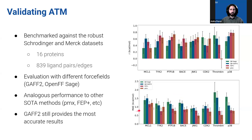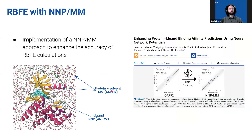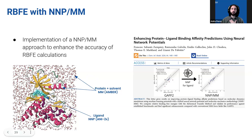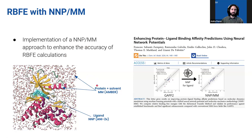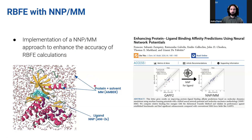Because we're able to use any type of force field, this gives us an opportunity to use neural network potentials. The idea is to use neural network potentials to parametrize the small molecules, since they have been trained with QM data and are much more precise at parametrizing ligands. The ligand force field is one of the main contributions to the accuracy of these simulations.